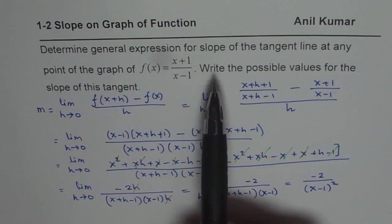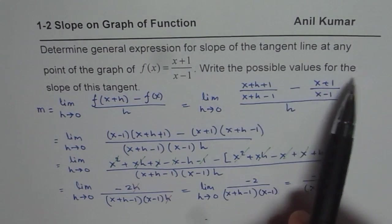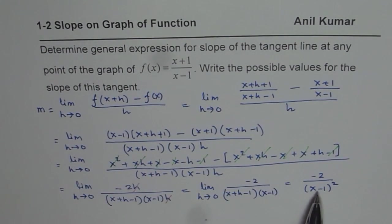Now, second part of this question is, write the possible values of slope of this tangent line. What we notice here is that you cannot find tangent at x equals 1 because that would be undefined. That is one thing which you observe. Second thing, you see that the tangent is always negative since the denominator is positive.